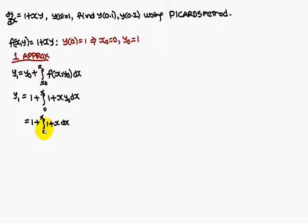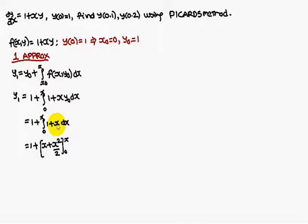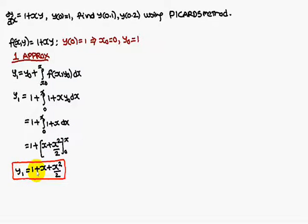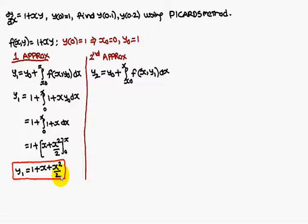It will be simplified as 1 plus the integral from 0 to x of (1 plus x) dx. That gives 1 plus [x plus x²/2] evaluated from 0 to x. Integrating, you get y1 is equal to 1 plus x plus x²/2.